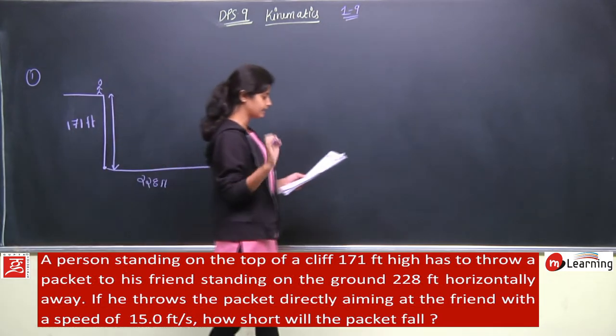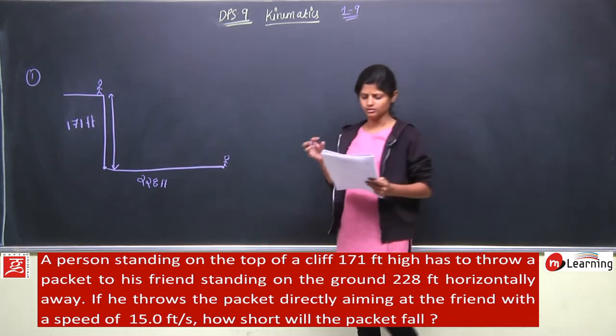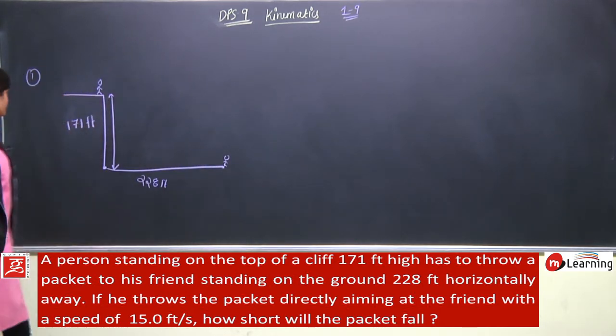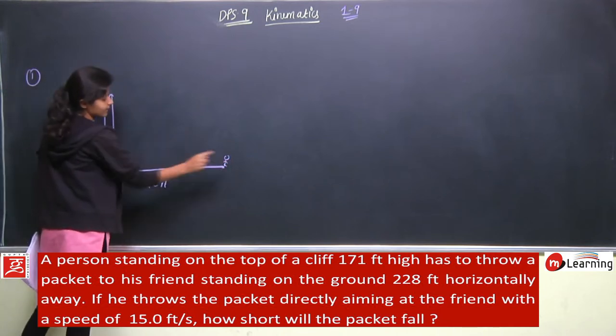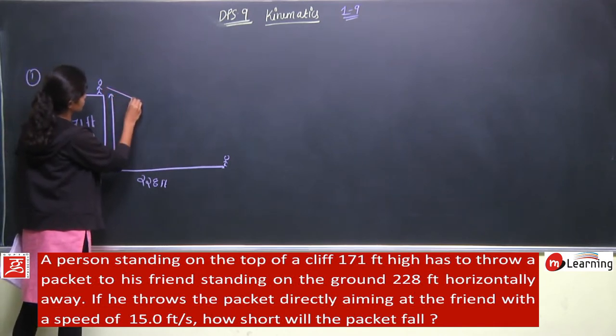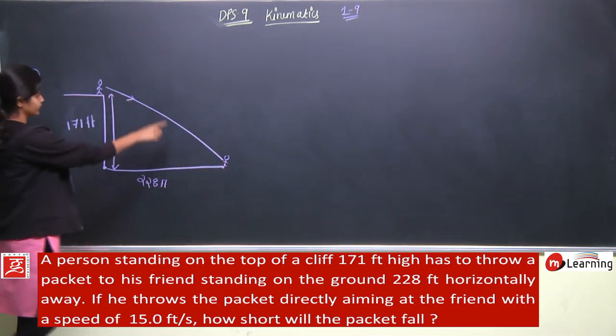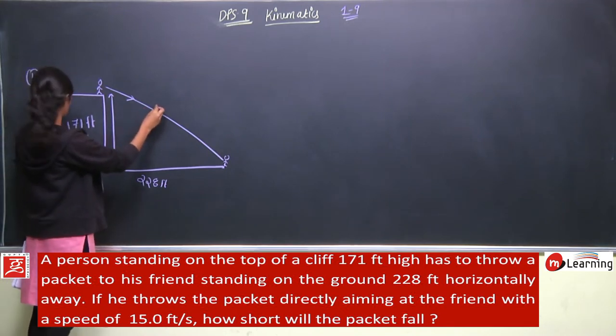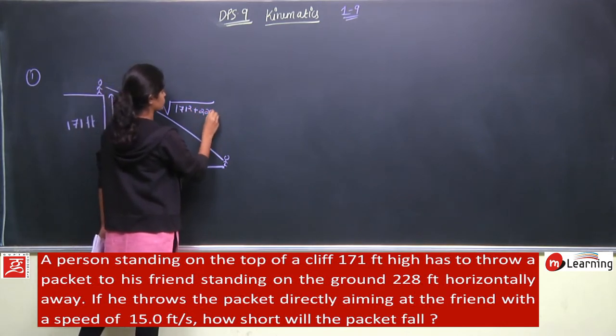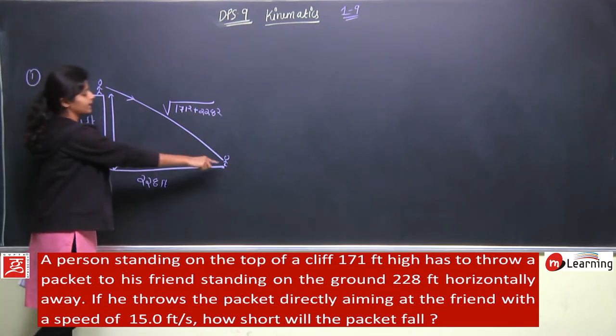If he throws the packet directly aiming at the friend with a speed of 15 feet per second, how short will the packet fall? Toh agar isse directly iske paas packet phekna hai aiming at his friend, toh uska jho velocity ki direction hogi woh sidhe aysi hogi, straight line. Toh ye distance kitna ho jaega under root of 171 square plus 228 square.